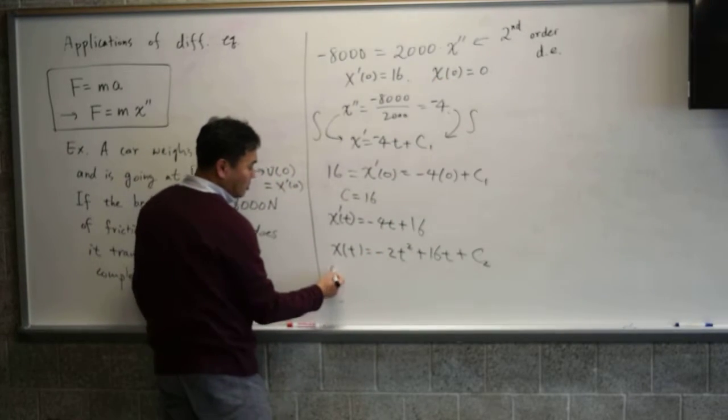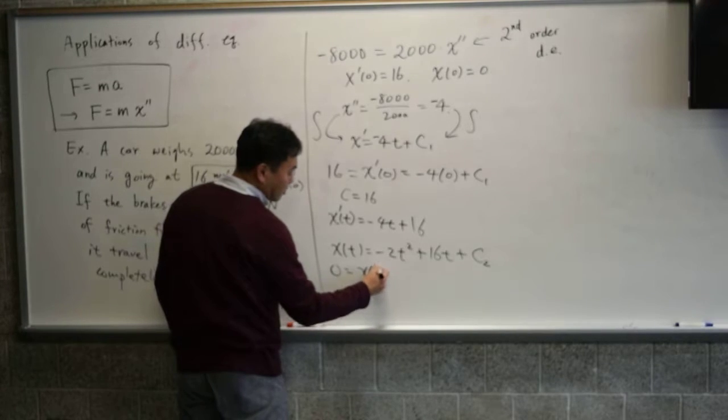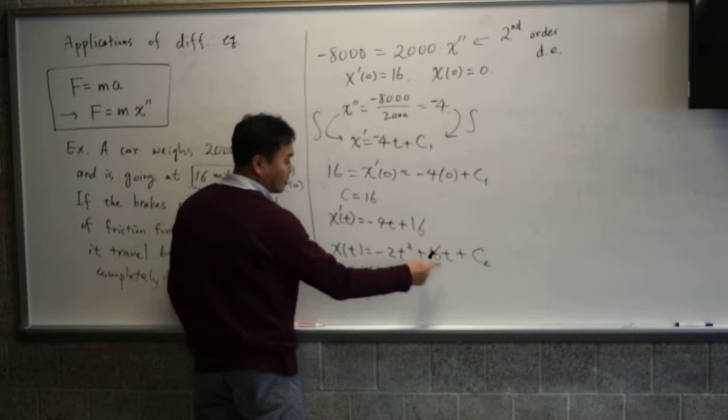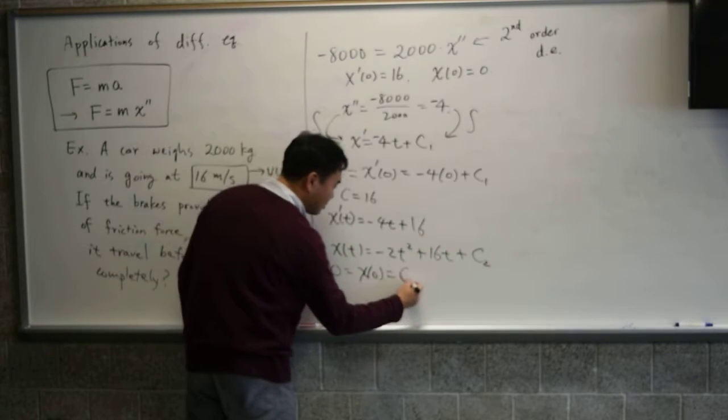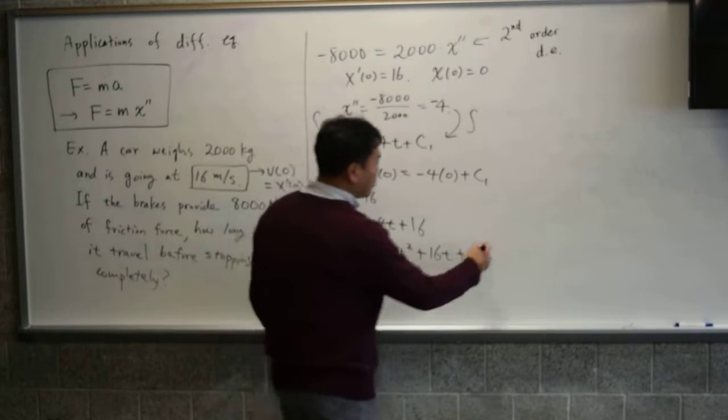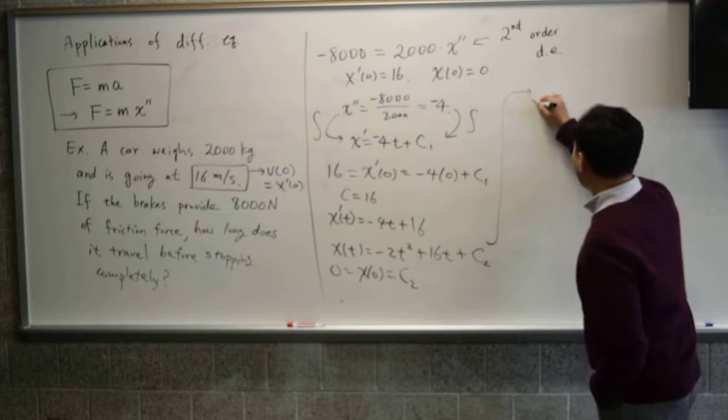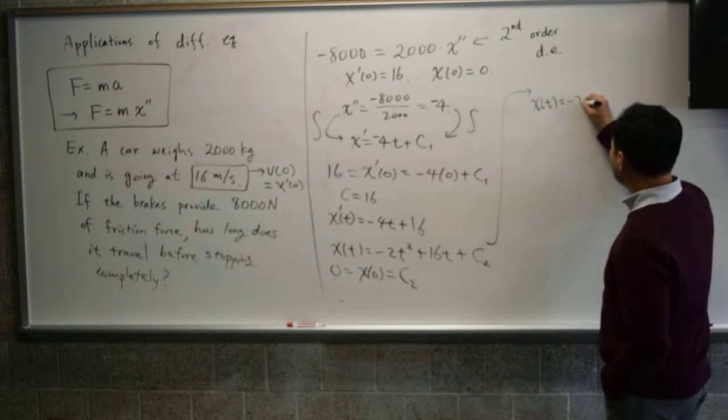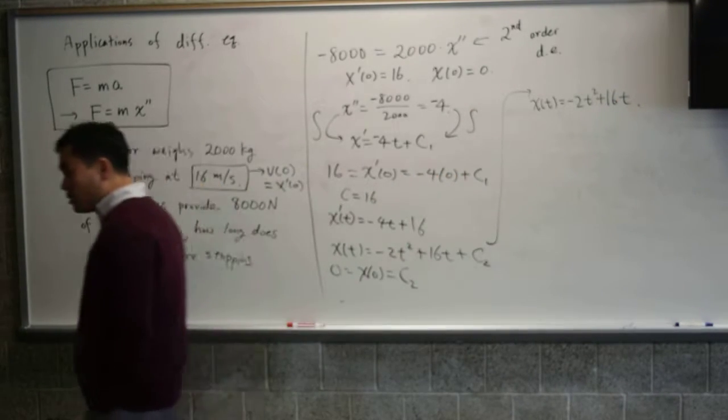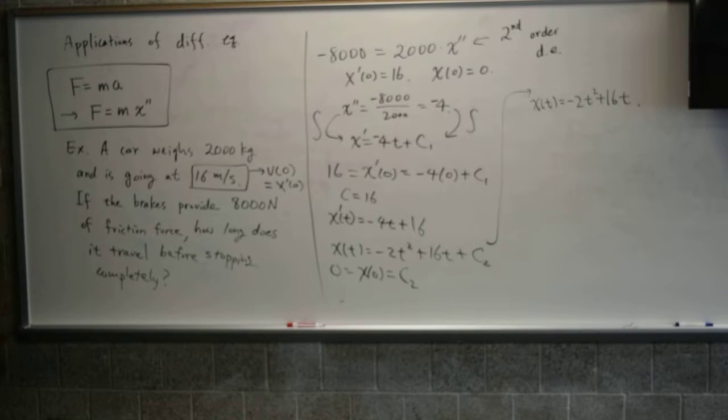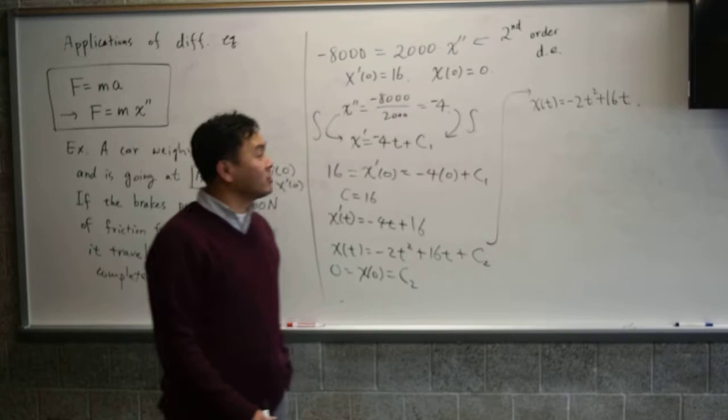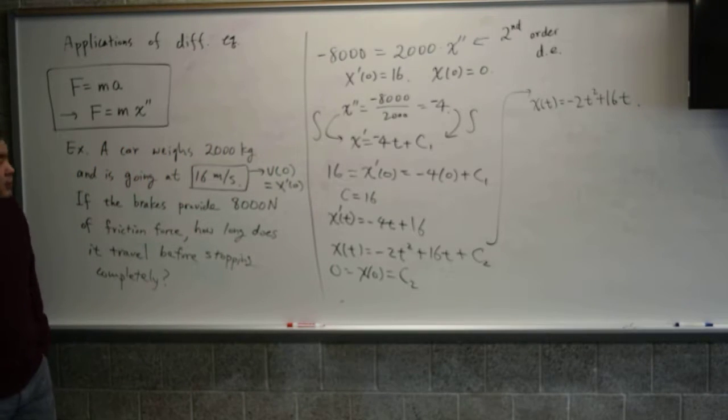Then let's use this initial condition. 0 is x of 0, but what is x of 0 here? If you plug in 0, 0, what do you get? 0. Everything is 0 except c2, right? So that's c2. So c2 is 0. And then, plugging in c2 equal to 0 here gives you the answer x of t equal to negative 2t squared plus 16t. And that describes the exact position of the car at each moment after t seconds after the brake is pressed.